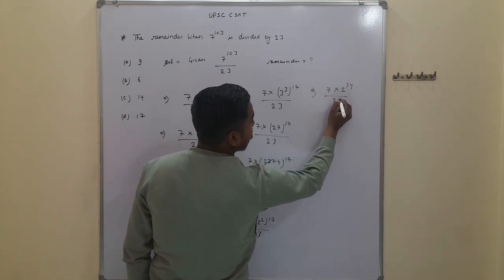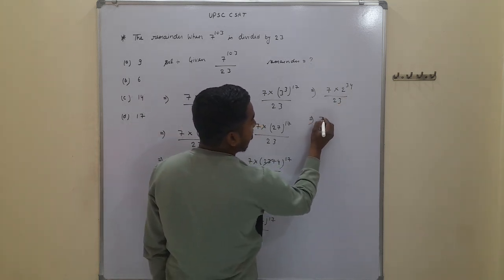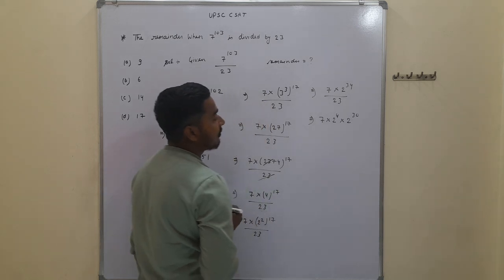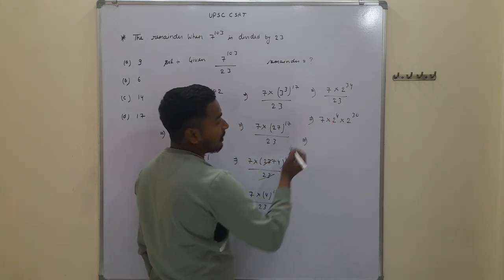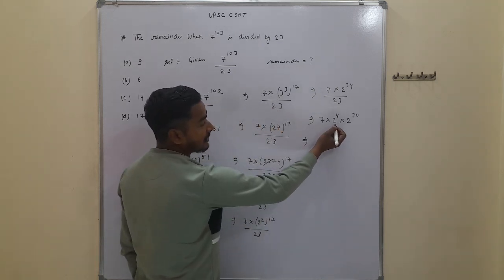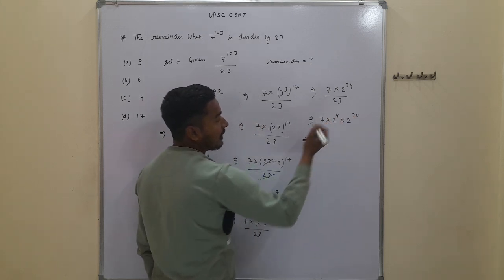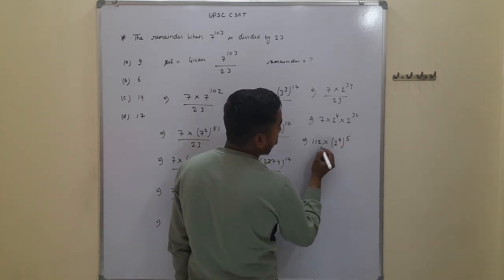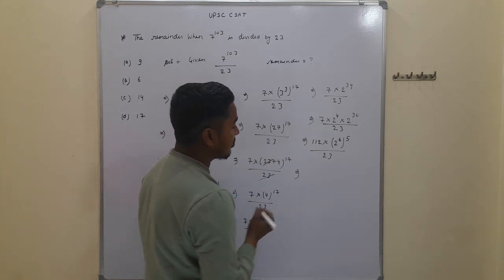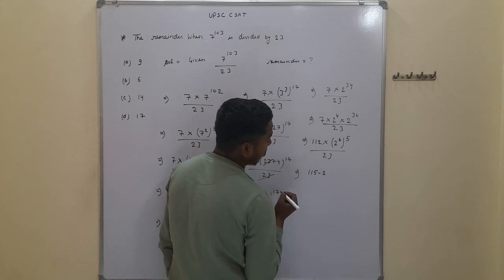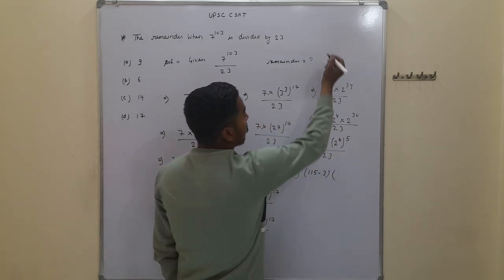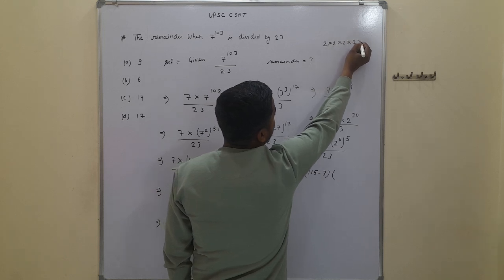We can write this as 7 into 2 to the power of 4, into 2 to the power of 30, upon 23. Now 2 to the power 4 is 16, and 16 sevens are 112. Further, we can write 2 to the power of 30 as 2 to the power of 6 into 5, upon 23. And 112 is written as 115 minus 3. Meanwhile, 2 to the power of 6 is 2 into 2 into 2 into 2 into 2 into 2, which equals 64.